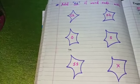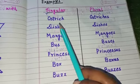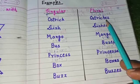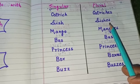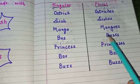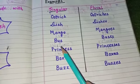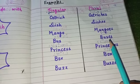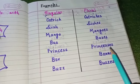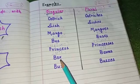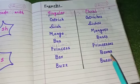Let's see some examples. These are singular form and these are plural. Ostrich ends with 'ch', so I added 'es' to make plural. Dish ends with 'sh', add 'es'. Mango ends with 'o', add 'es'. Bus ends with 's', add 'es' — buses. Princess ends with double 's', plural is princesses. Box ends with 'x', plural is boxes.